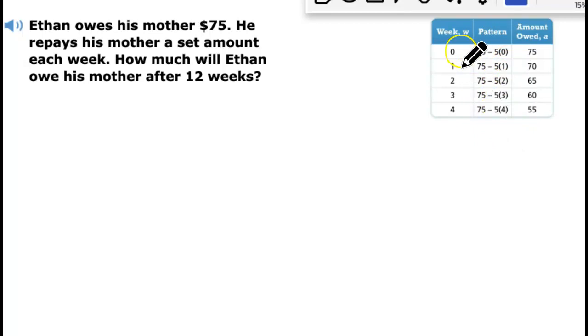For week 1, he paid $5, so 75 minus 5 times 1, which is week 1, so now he owes $70. If you look at week 4, 75 minus 5 times 4, because it's week 4, that's going to be 75 minus 20, which gives you $55.